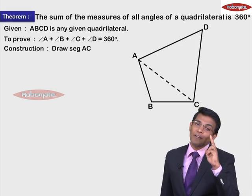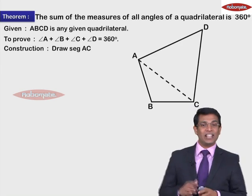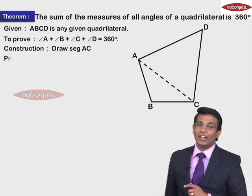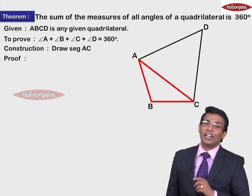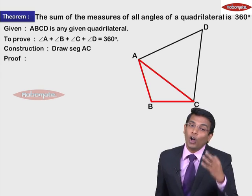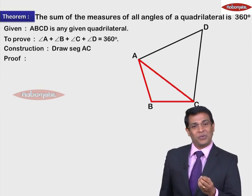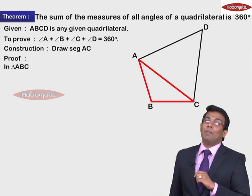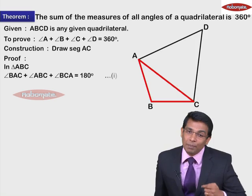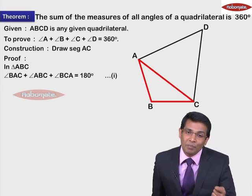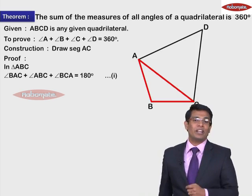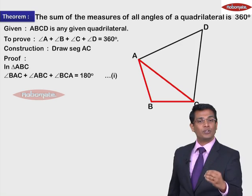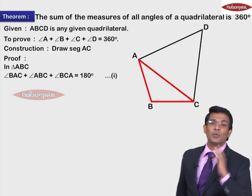Now because of this diagonal, have you got two triangles? Yes. One triangle is ABC and the other triangle is ADC. Let's consider triangle ABC. In a triangle all three angles sum to 180 degrees. So we write: in triangle ABC, measure of angle ABC + measure of angle BAC + measure of angle ACB = 180 degrees. The reason is the angle sum property of a triangle — the sum of the measures of all angles of a triangle is 180 degrees. This is Statement 1.